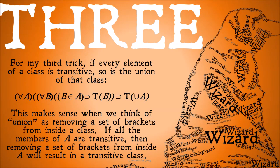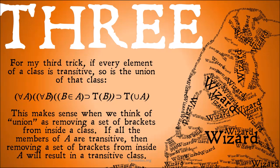For the third trick: if every element of a class is transitive, so is the union of that class. For all A and all B, if B is a member of A and B is transitive, then the union of A is transitive. This makes sense when we think of union as removing a set of brackets from inside a class. If all the members of A are transitive, then removing a set of brackets from inside A will result in a transitive class, because all the members were transitive, so it must itself be transitive.